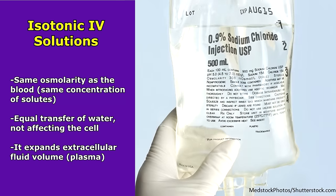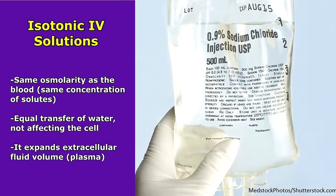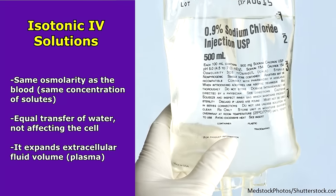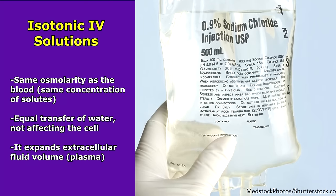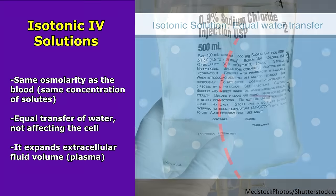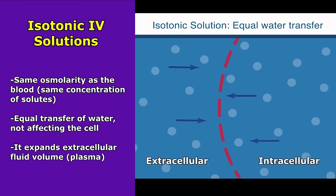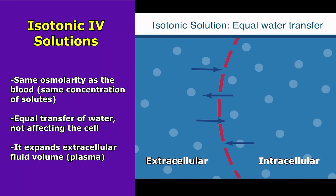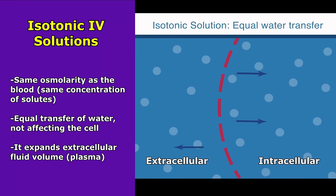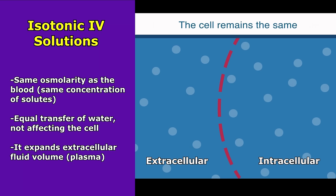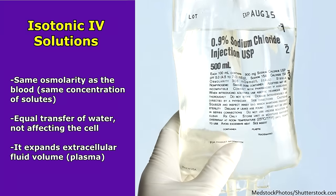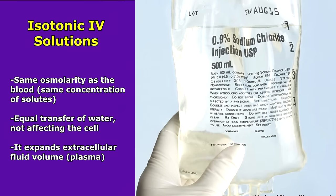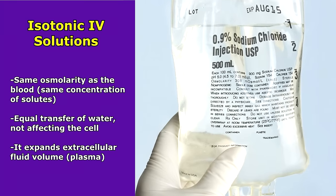Isotonic IV solutions have the same osmolarity as the blood — the same concentration of solutes. With these fluids, there's going to be an equal transfer of water, so the cell is going to stay the same size. Therefore, we can use these fluids to simply expand extracellular fluid volume, essentially our plasma.